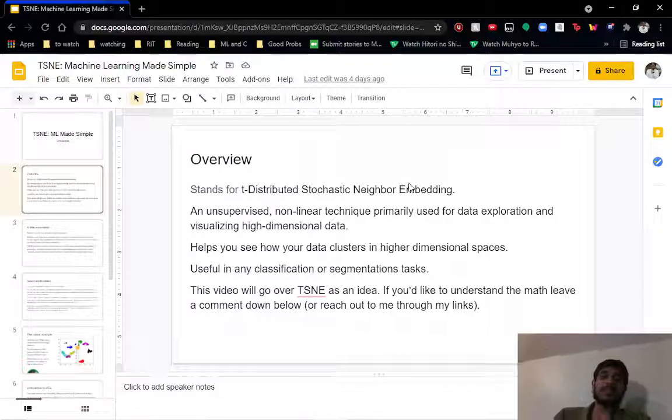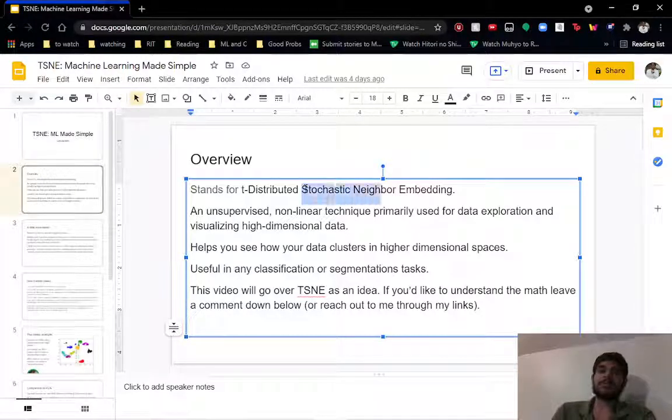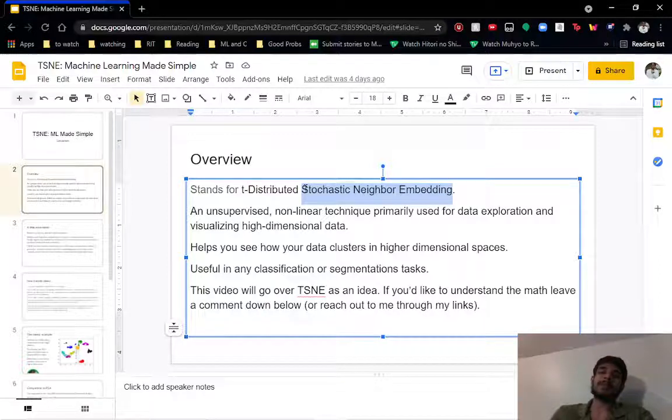So, a quick overview of the topic. The TSNE stands for T-Distributed Stochastic Neighbor Embedding. Now, that might sound very complicated, but to a certain degree it is something that you should be aware of. What I found most important in this algorithm is the Stochastic Neighbor Embedding part, and we'll go over what this means exactly.